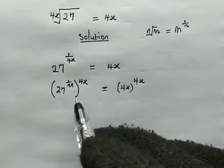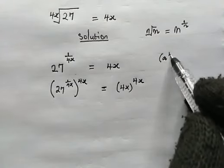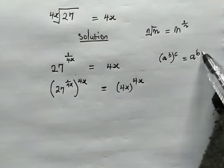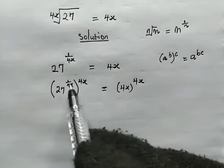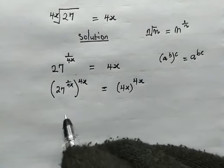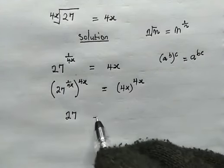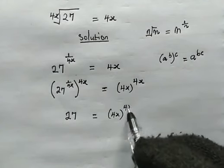Now from the left hand side, let us recall another property here. When we have a to the power of b, in bracket, raise power of c, this is same as a to the power of b times c. Now from here, when we multiply these powers together, 1 over 4x times 4x, that will give us 1. And here we are left with 27 to the power of 1. And from the right hand side, we have 4x raised power of 4x.